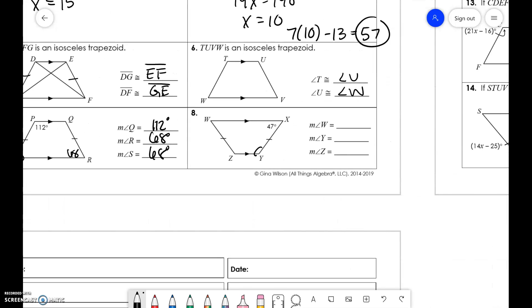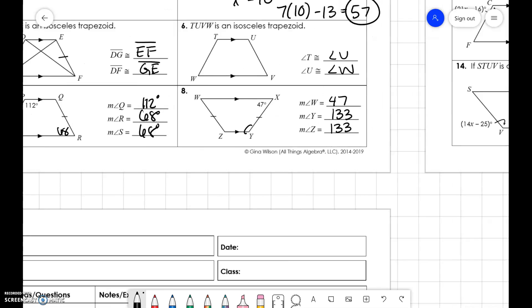Over here, I'm going to find angle Y first. 47, 180 minus 47 gets us 133. Base angles are the same. So, the base one is W and X, those are 47. And angle Z is 133.